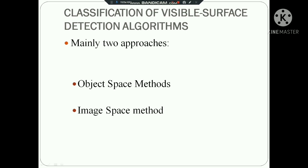Two approaches are used. There are also different types of algorithms: A buffer, Z buffer, back face detection, and scan line methods. These are all kinds of visible surface detection algorithms. The general classification comes down to two: object space and image space. These two approaches are used in visible surface detection algorithms.